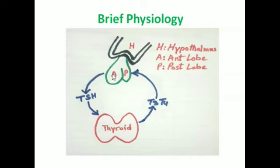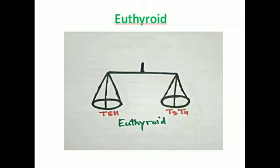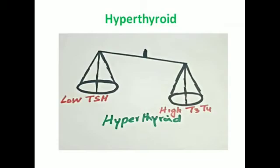Euthyroid: This is a status where TSH level in the blood is within normal limits and the T3, T4 level is also within normal limits. So the thyroid gland is functioning normally and the pituitary gland is also functioning normally.